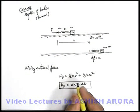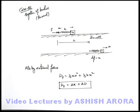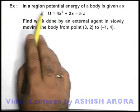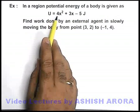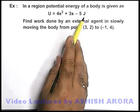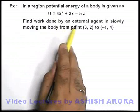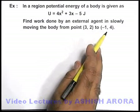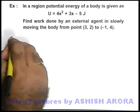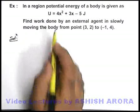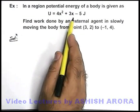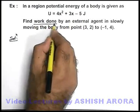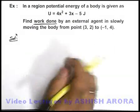So be careful about such cases as we have discussed. In this example it is given that in a region the potential energy of a body is U = 4x² + 3x − 5 joules, and we are required to find the work done by an external agent in slowly moving the body from (3, 2) to (−1, 4). For the solution: since potential energy is given, it is a conservative field, and in a conservative field work done mainly depends on initial and final position. So let us calculate the initial and final energy.